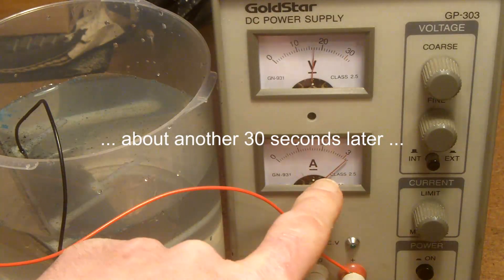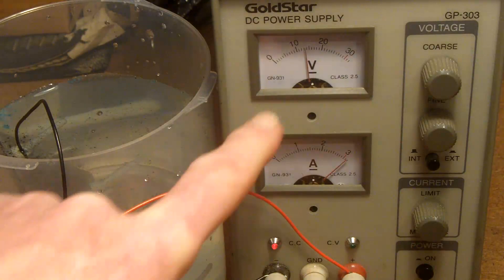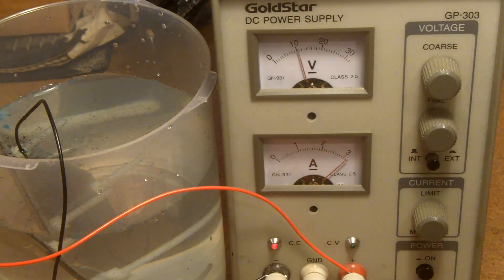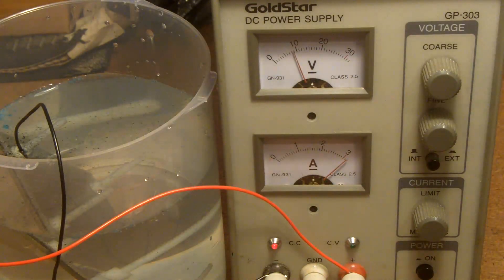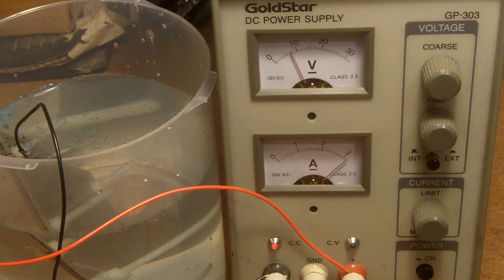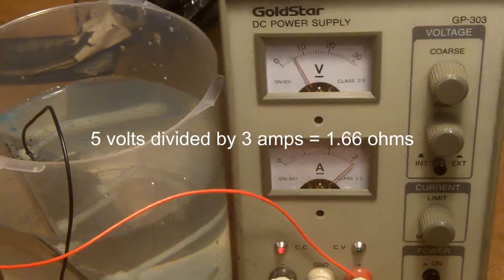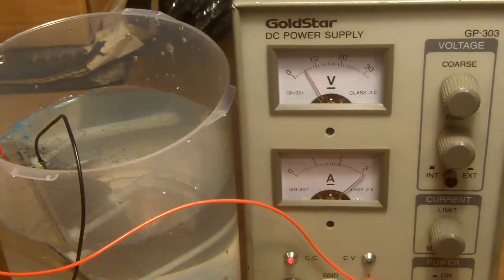This has gone up to three amps again, so I've gone into voltage limit now, or sorry, into current limit, and that's bringing the voltage down. It looks as though I've actually got a short circuit across the plates or very close to a short circuit, so I guess that material is conductive.